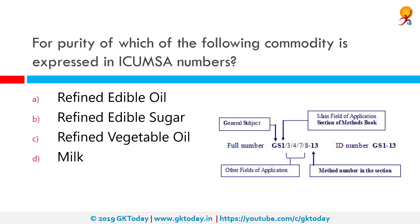The purity of which of the following commodities is expressed in ICUMSA numbers? The correct answer is refined edible sugar. The ICUMSA color scale is used to measure the grade and quality of sugar. It is a measurement of the yellowness of the sugar resulting from residual molasses not removed in the refining process, and can be used to monitor and control the manufacturing process.